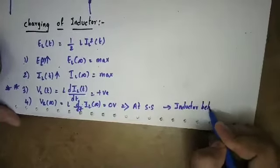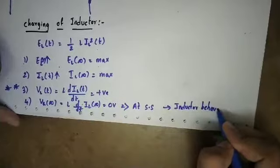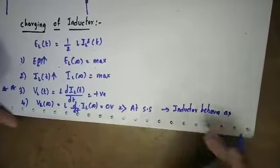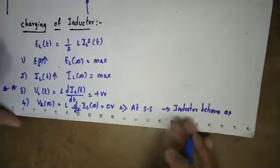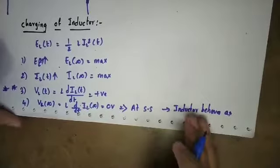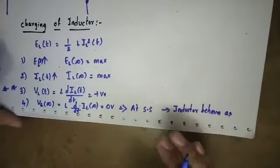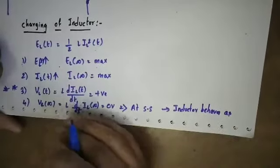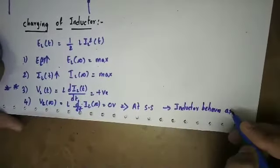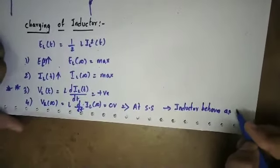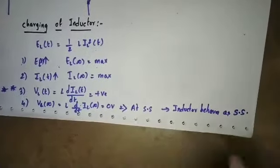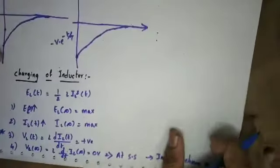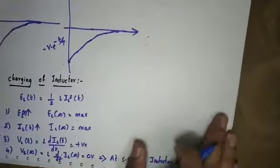Inductor behaves as a short circuit at steady state. Capacitor is open circuit. So in steady state: inductor is short circuit, capacitor is open circuit. This is important.